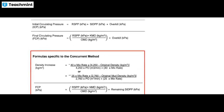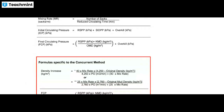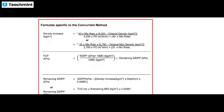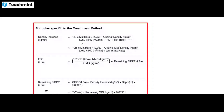ICP — initial circulating pressure — equals RSPP plus SIDPP plus overall kill pressure in kilopascals. FCP — final circulating pressure — equals RSPP in kilopascals multiplied by KMD in kg/m³ divided by OIMD, plus overall kill pressure in kilopascals. There is also a formula specific to the concurrent method for density increase, FCP, and remaining SIDPP in kilopascals.